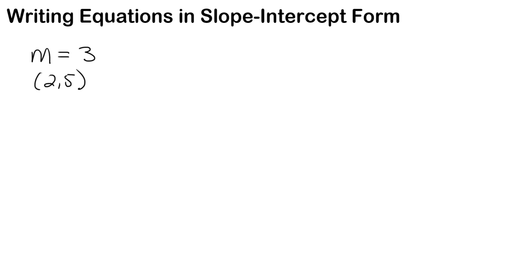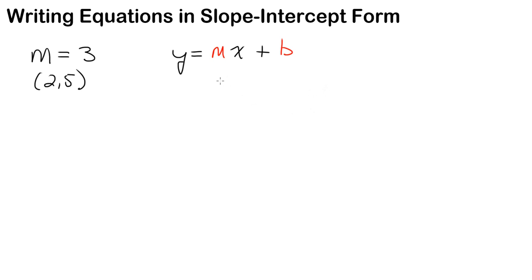In this video, we're going to talk about writing equations in slope-intercept form. Slope-intercept form is y equals mx plus b, and you notice that m, the slope, and b, the y-intercept, are highlighted, because all you really need to do to write an equation in slope-intercept form is to get the slope and the y-intercept and plug them into the equation.